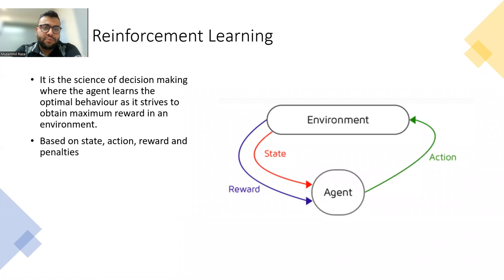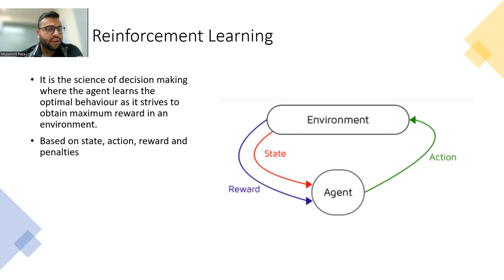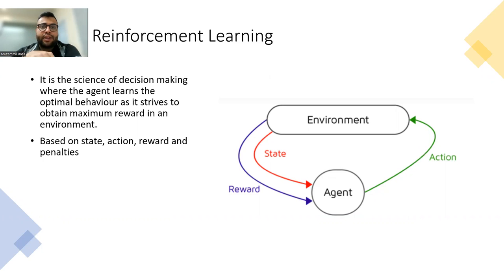So to start with, what is reinforcement learning? Reinforcement learning is a science of decision-making where the agent learns the optimal behaviour as it strives to obtain maximum rewards in an environment. It is based on state, action, reward, and penalties. As you can see on the diagram on the right, the agent goes into an environment, explores it, and then takes an action. Once it takes an action, it receives a penalty or reward accordingly.